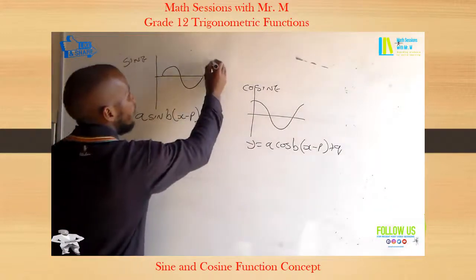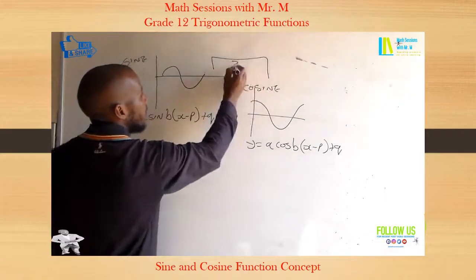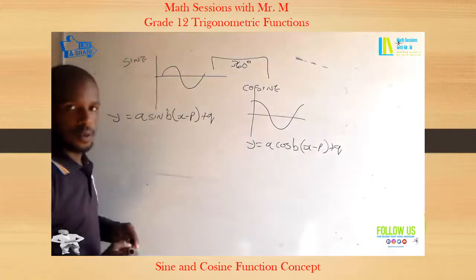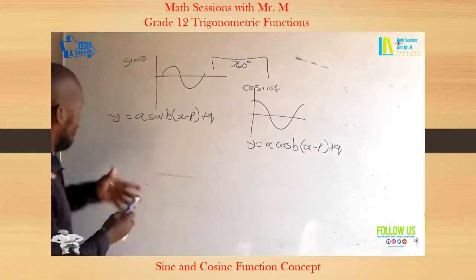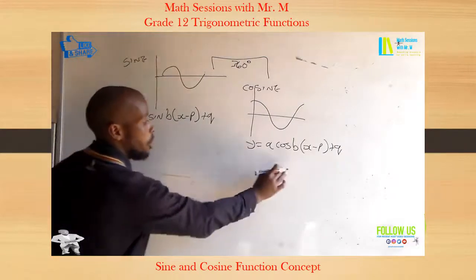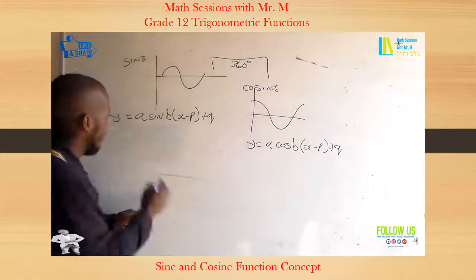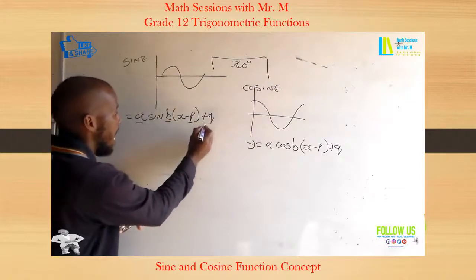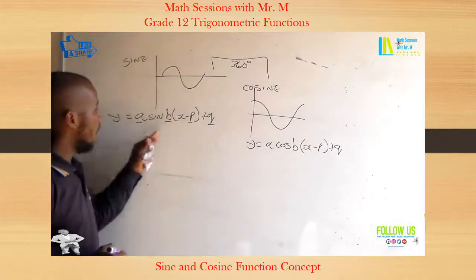And these two are on a period of 360 degrees. They share the same period. Now we have the unknowns in these two equations which basically look similar: a, b, p, and q.